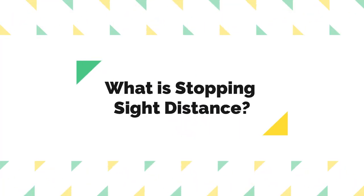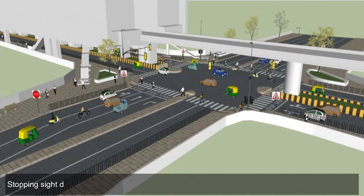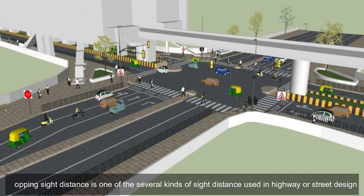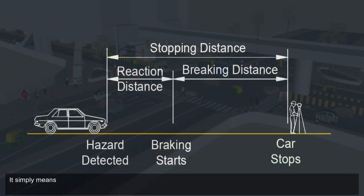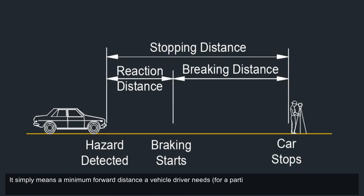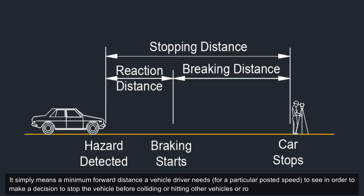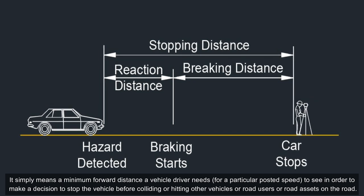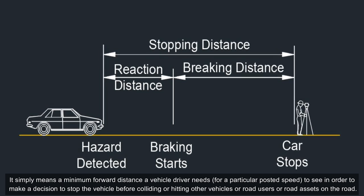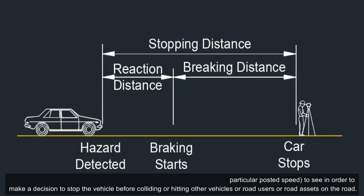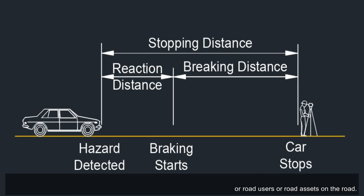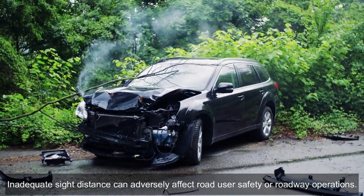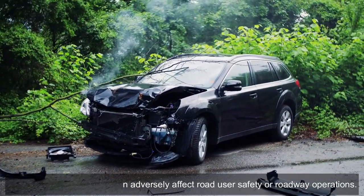Stopping sight distance is one of several kinds of sight distance used in highway or street design. It simply means the minimum forward distance a vehicle driver needs, for a particular posted speed, to see in order to make a decision to stop the vehicle before colliding with or hitting other vehicles, road users, or road assets on the road. Inadequate sight distance can adversely affect road user safety or roadway operations.